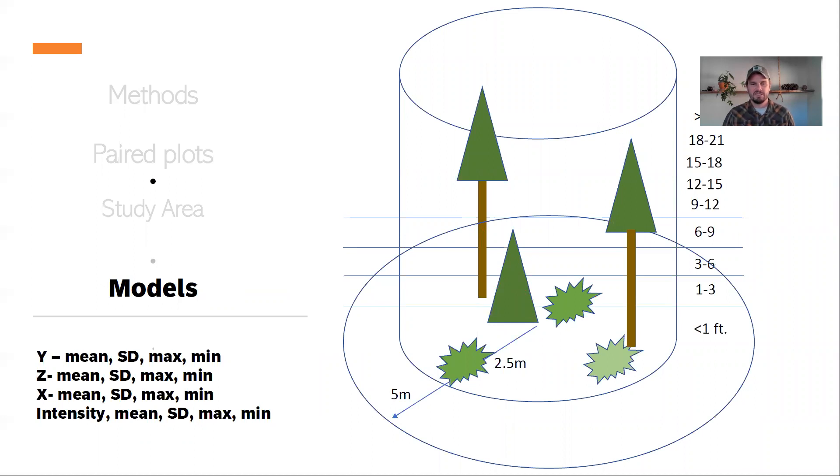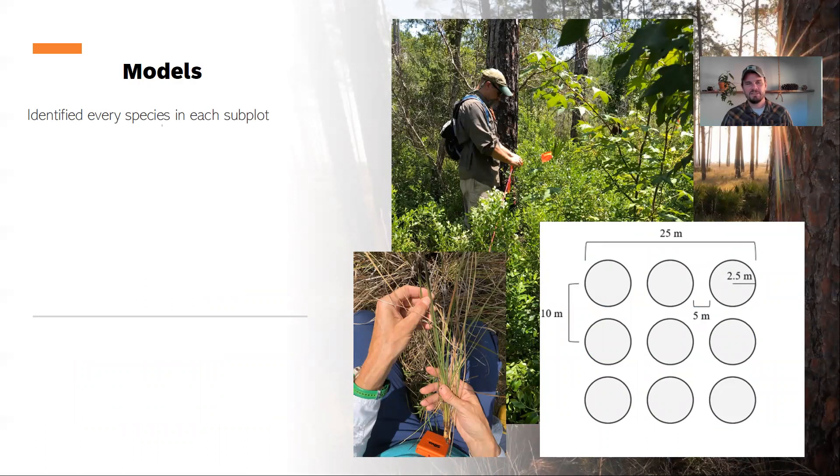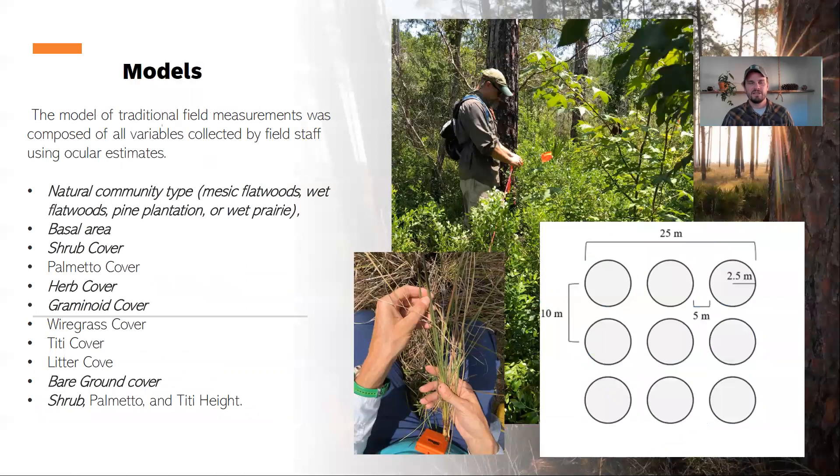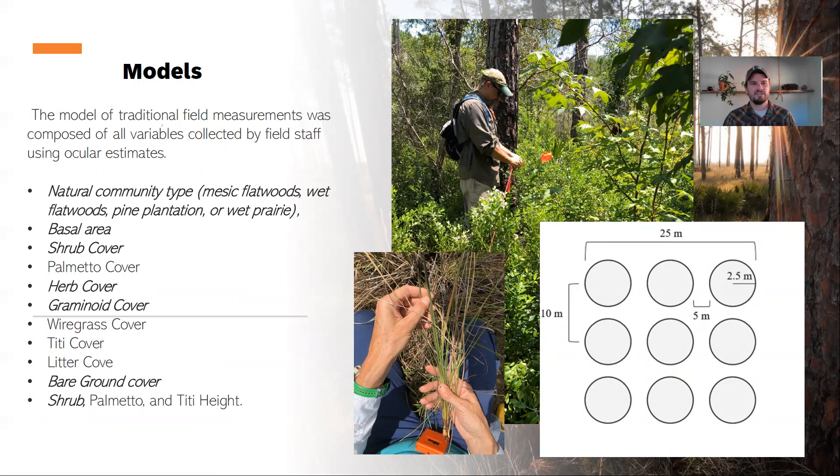Besides the X, Y, Z coordinates and their calculations with those, we did calculations with the strata. So we broke up canopy cover or point density into different strata we thought would be important. And then we also tried different radial samples around the plot center to produce all those different values. We identified every species in each subplot and then we collected ocular estimates in each one of the subplots—some common metrics like shrub cover and herb cover and some very specific to the local area and species that they're interested in, like wiregrass cover.